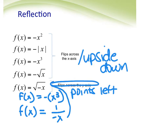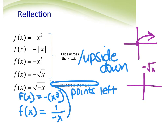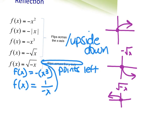Whether the negative is on the front or on the inside for the cubic function, it can look the same because of symmetry. For the square root: normally it points up and to the right; a negative on the front flips it down and to the right; a negative on the inside points it up and to the left; both negatives gives down and to the left.